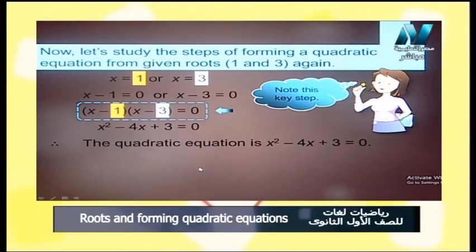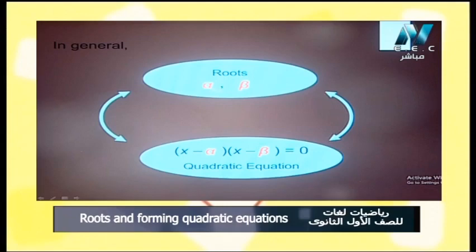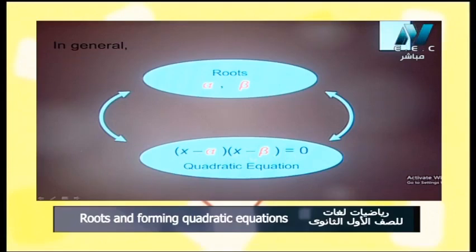We have formed the quadratic equation using the two roots 1 and 3 — we put x minus 1 in one bracket and x minus 3 in the other. If we have roots alpha and beta, using any letters you prefer, the quadratic equation is x minus alpha multiplied by x minus beta equals 0.